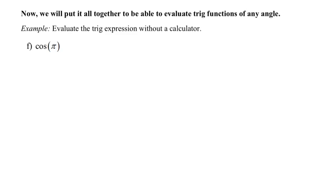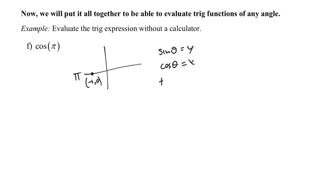In example F, we have cosine of pi. That is a quadrantal angle, so I don't need my chart of values — I need to remember these four points. The point located at pi is negative one and zero. Cosine theta is equal to x, so cosine of pi is just the x-coordinate of that point, which is negative one.